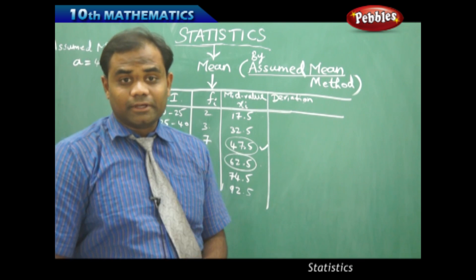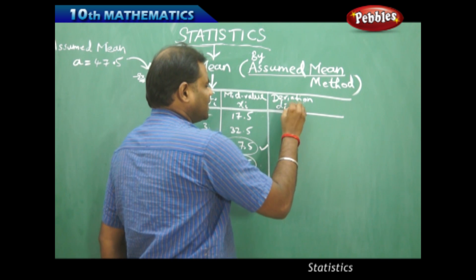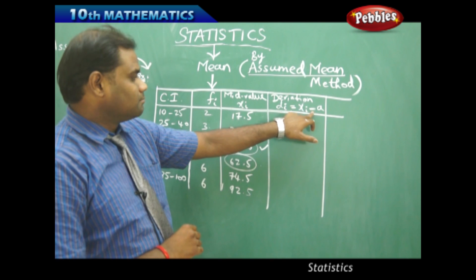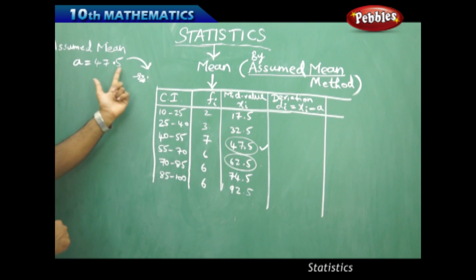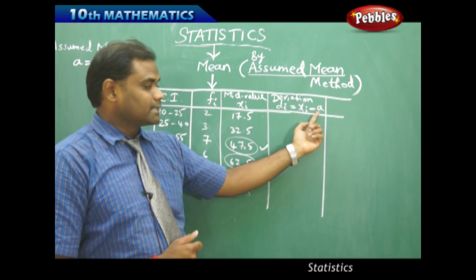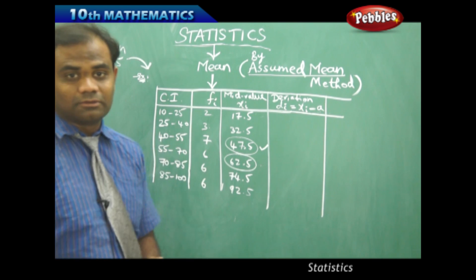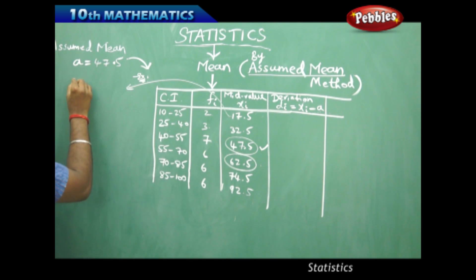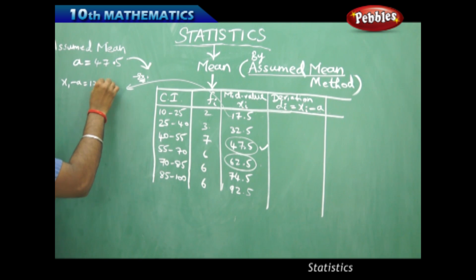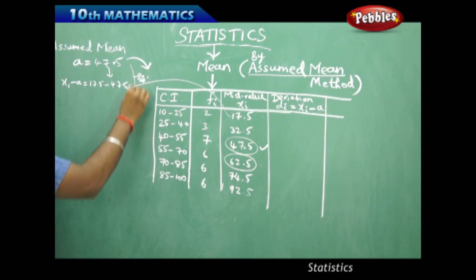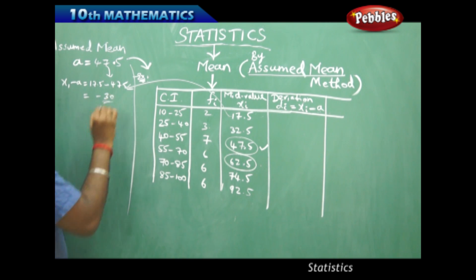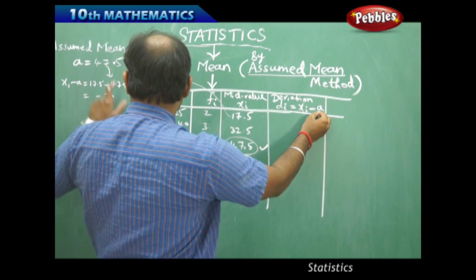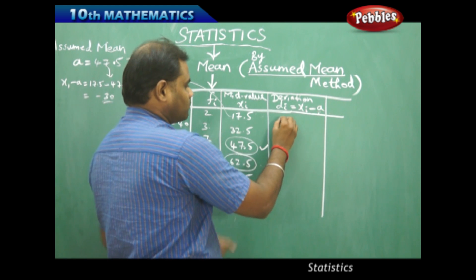The deviation is denoted by di and is calculated using the formula di = xi − A, where A is the assumed mean. So for the first mid-value, x1 = 17.5, we get d1 = 17.5 − 47.5 = −30. Note that deviation can be negative. When we subtract the assumed mean 47.5 from the first mid-value 17.5, we get −30.